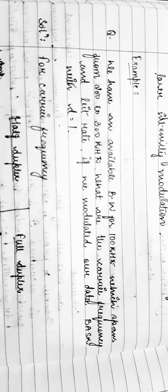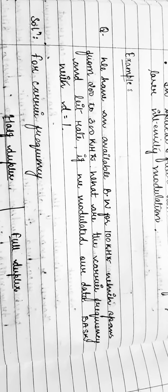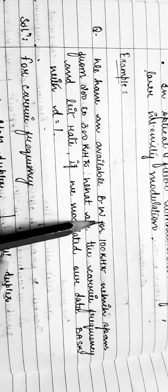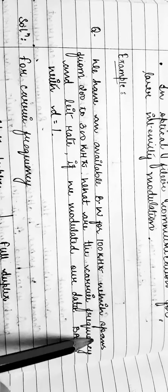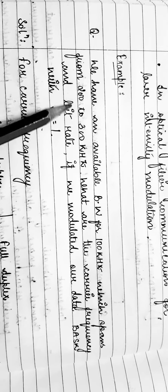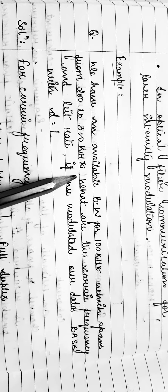Good morning to one and all. In today's lecture we'll discuss the example of ASK. It has been given in the question that we have an available bandwidth of 100 kilohertz which expands from 200 to 300 kilohertz. We need to find the carrier frequency and bit rate if the modulated data is BASK with D equals to 1.